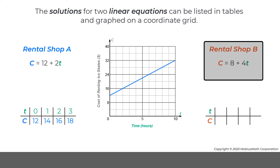For Shop B, renting skates for zero hours costs $8. For one hour, the cost is $12. For two hours, the cost is $16. And for three hours, the cost is $20.